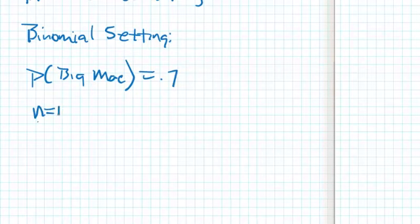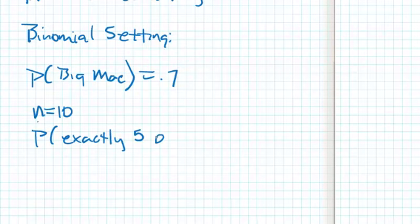We're going to take N equals 10 — that's our sample size. What I want to know is: what is the probability that exactly five of those cars order a Big Mac?